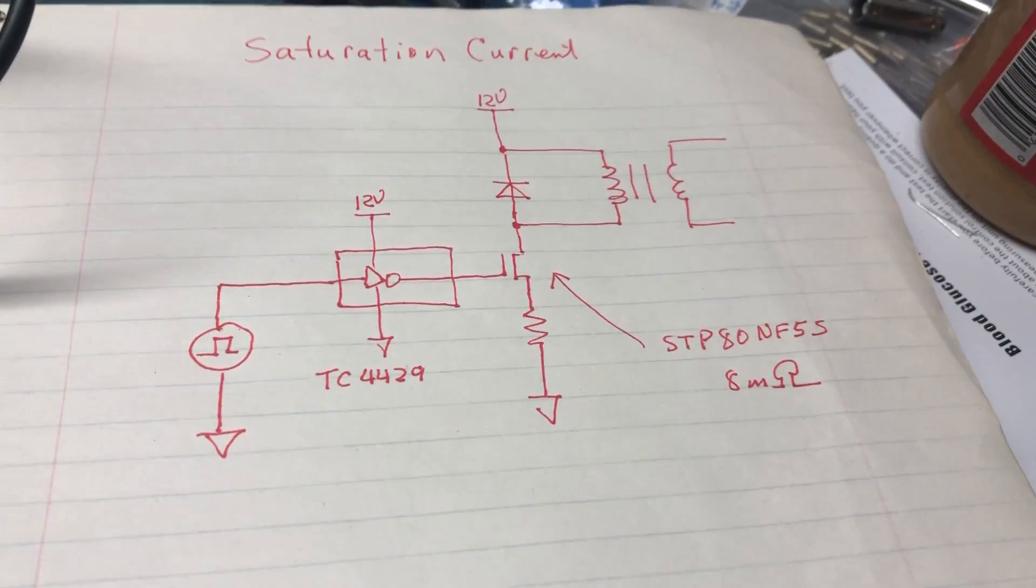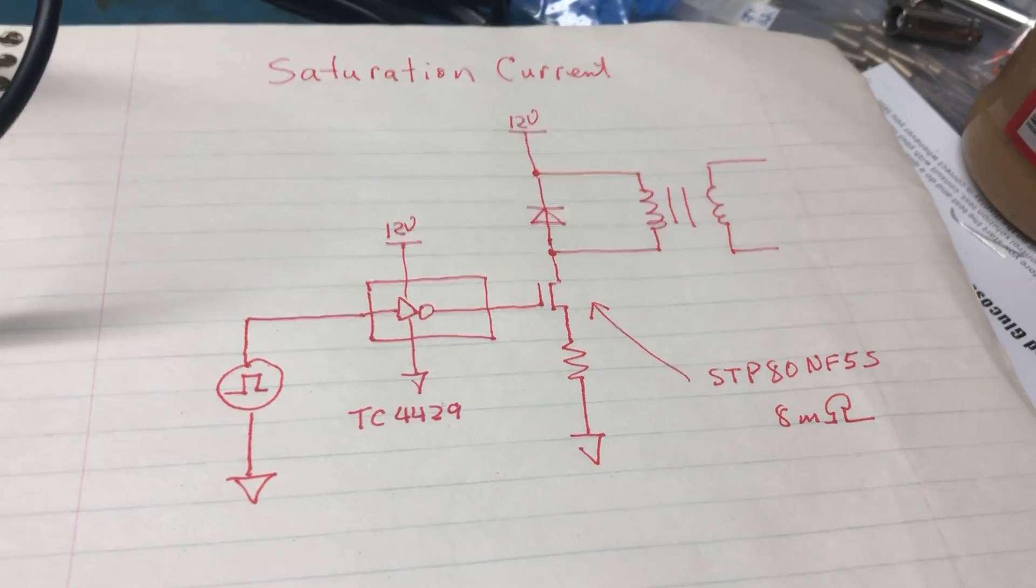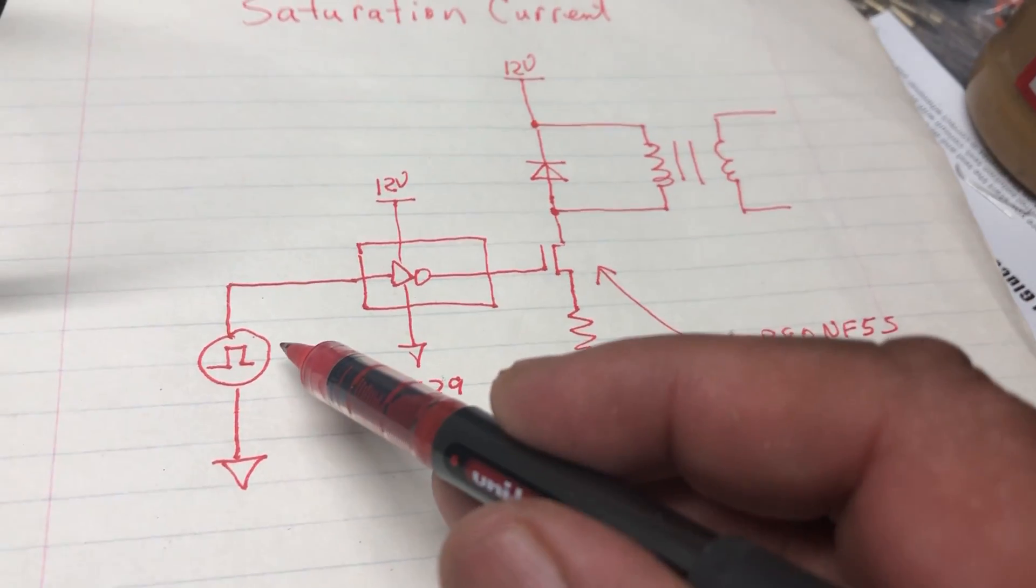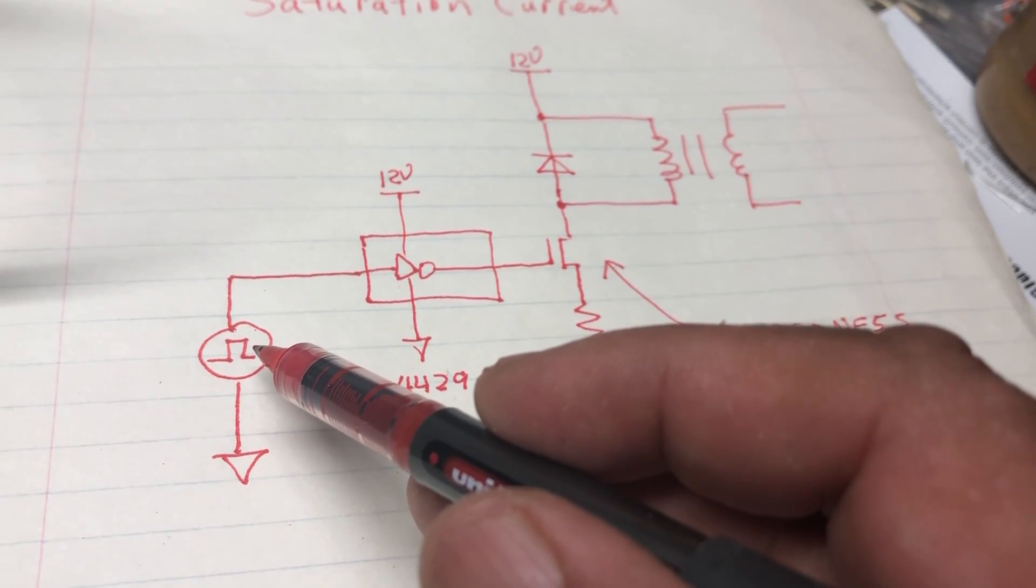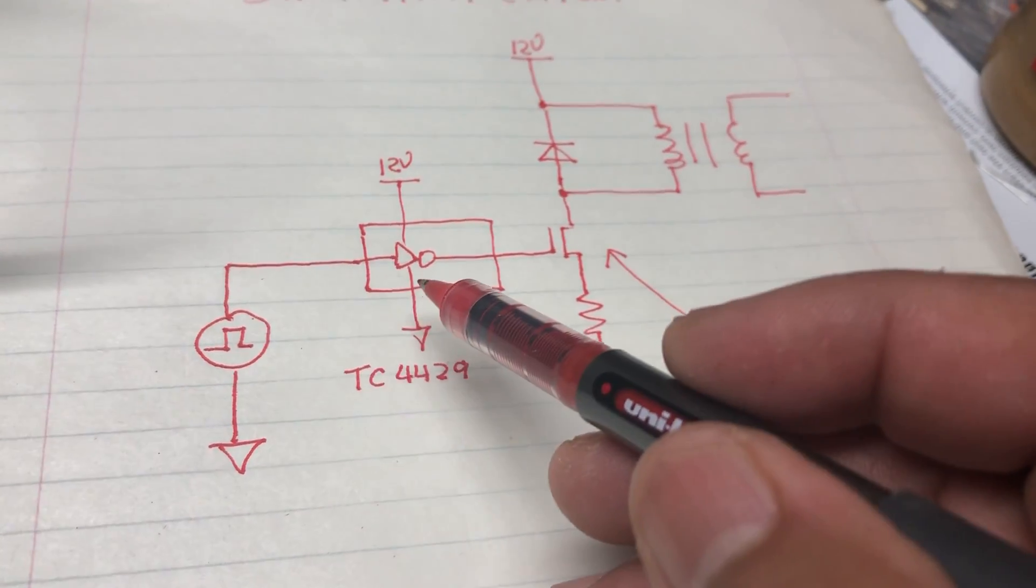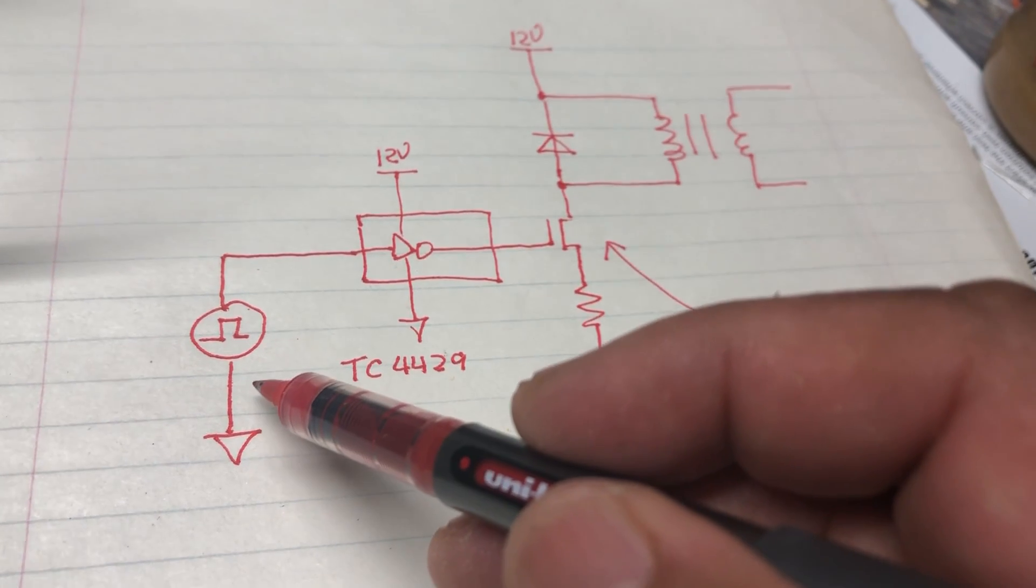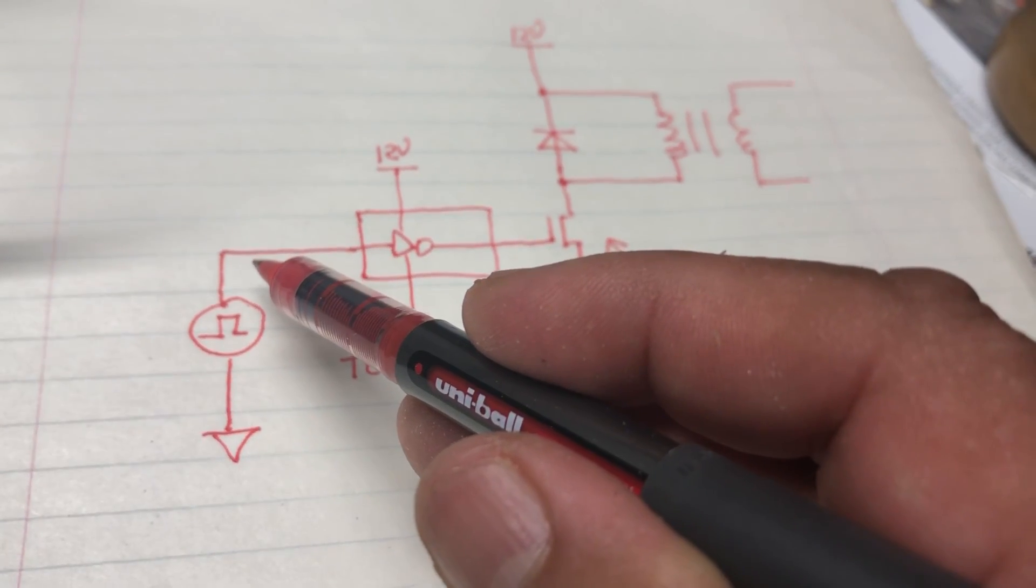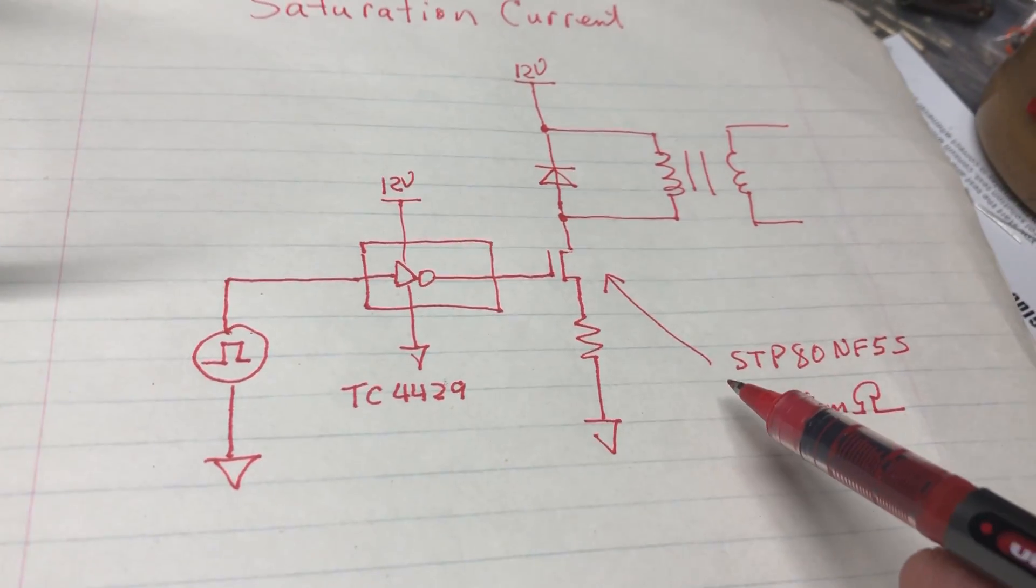Okay, this is a saturation current circuit that I prototyped here. I'm using a function generator to generate my pulses - in this case I'm using a Rigol - and then I'm using an integrator chip, the TC4429, because the impedance of the function generator is 50 ohms so it doesn't have enough low impedance to drive this capacitor or the MOSFET.